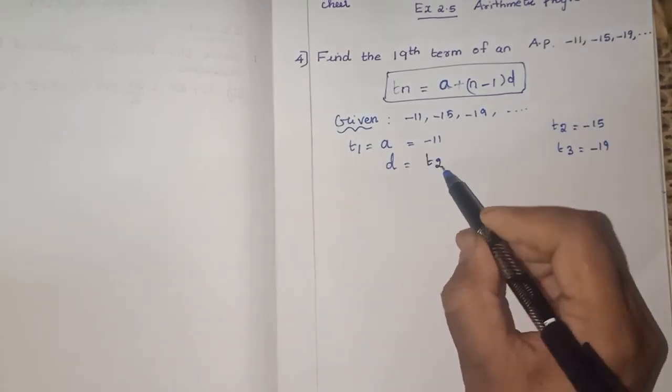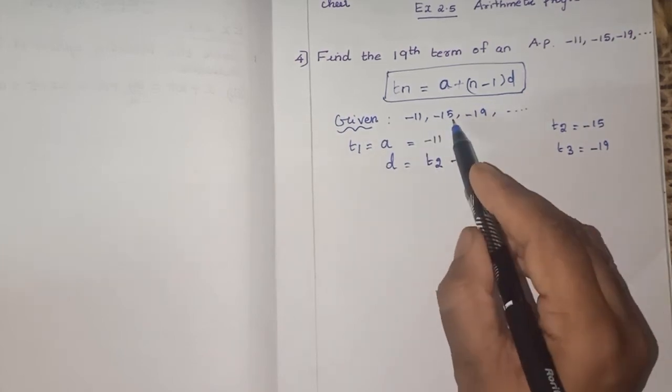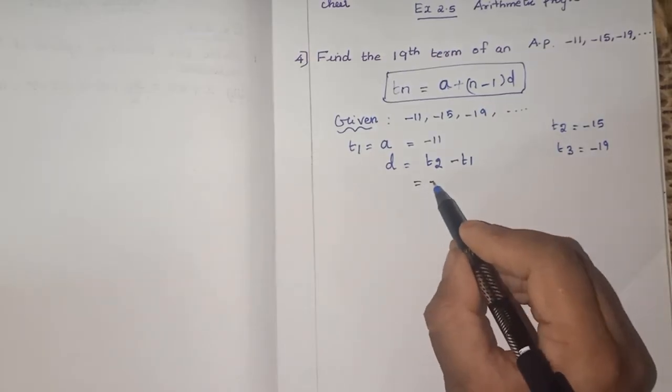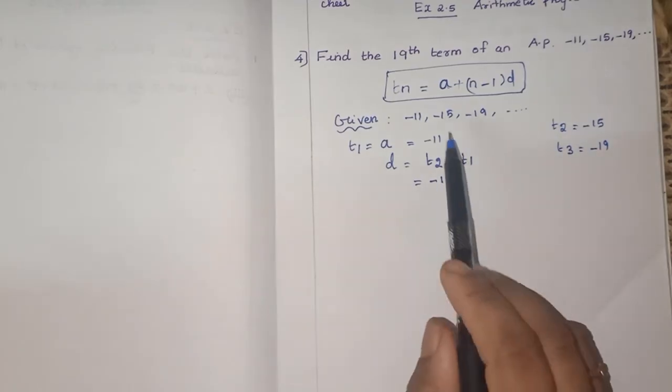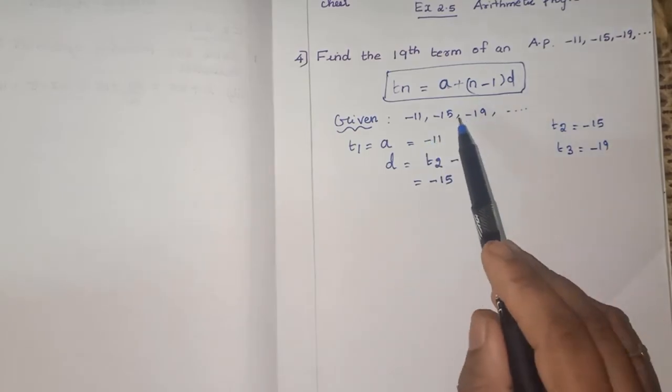T2 minus T1. This is T2, this is T1. So T2 minus T1. So what is T2? Minus 15. You must be very careful when you are manipulating with negative sign integers. Minus 15.